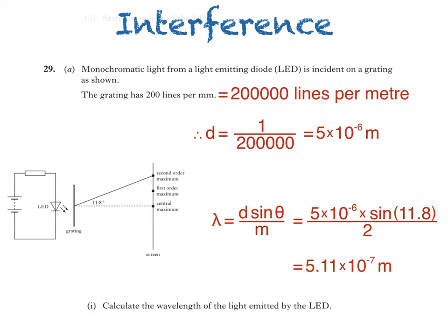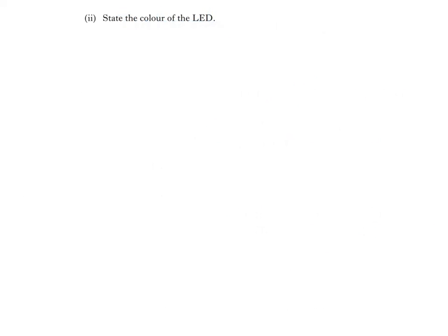Part 2 of the question asks us to state the colour of the LED. Here's our answer to part 1 of the question. We'll be comparing this value to the wavelengths listed in the data sheet at the front of the exam paper, so we'll have to convert it to nanometres. This wavelength can also be written as 51.1 times 10 to the negative 8 metres, or 511 times 10 to the negative 9 metres. In other words, 511 nanometres.